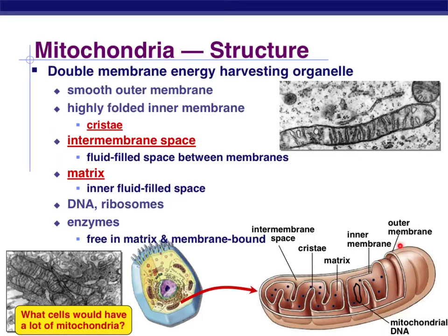This part is the outer membrane. All these folded regions are made up of the inner membrane, and each fold is called a cristae. Between your outer membrane and your folded inner membrane is a space called the intermembrane space, and it's not like an air pocket — it's fluid filled. As a matter of fact, the entire mitochondria is filled with a fluid called the matrix.